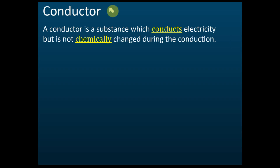A conductor is a substance which conducts electricity but is not chemically changed during the conduction. For example, metal copper ions can conduct electricity, but when they conduct electricity, they do not chemically change. Iron does not change to iron oxide or iron chloride. So chemically, they do not change when they conduct electricity.